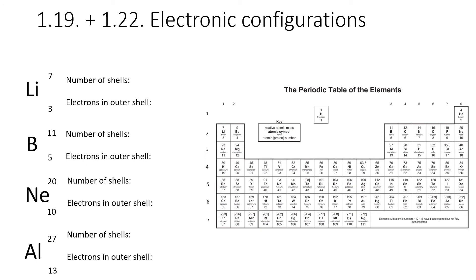For specification points 1.19 and 1.22, we need to say how any element's position in the periodic table relates to its electronic configuration. For example, lithium — highlighted in red — is in group one, which means it has one electron in the outer shell, and it's in period two, which means it has two shells. Boron is in group three so it has three electrons in the outer shell, and it's in period two so it has two shells. Neon is in group eight or group zero — it's in period two so it has two shells and eight electrons in the outer shell. Aluminium is in group three so it has three electrons in the outer shell, and it's in period three which means it has three shells.